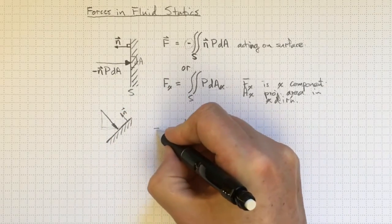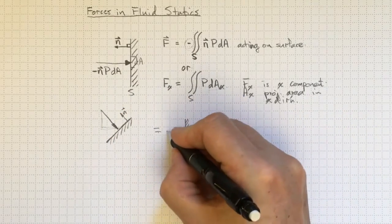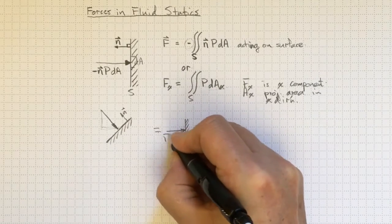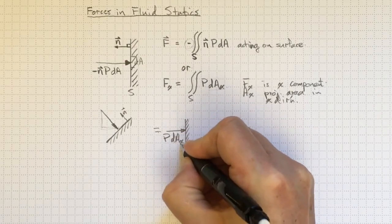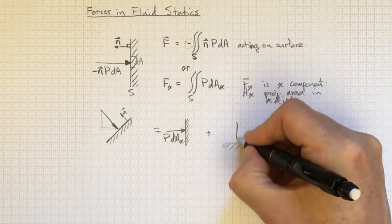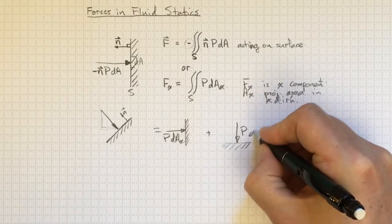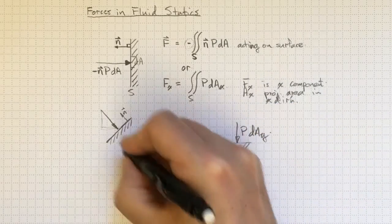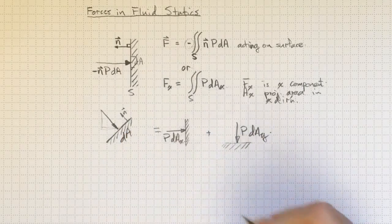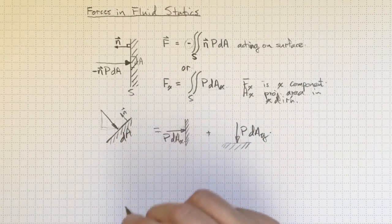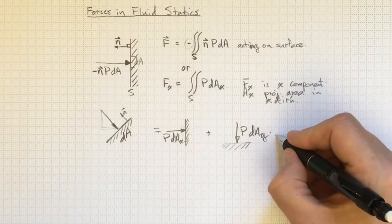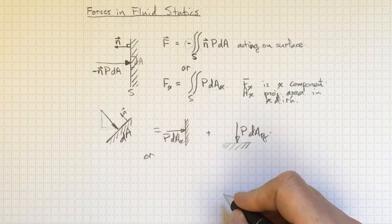An x and a y component, with one of them being pressure times the area projected in the x direction, and the other one being pressure times the area projected in the y direction, where those are each projected areas of dA. I can look at it this way, or I can look at it this way.